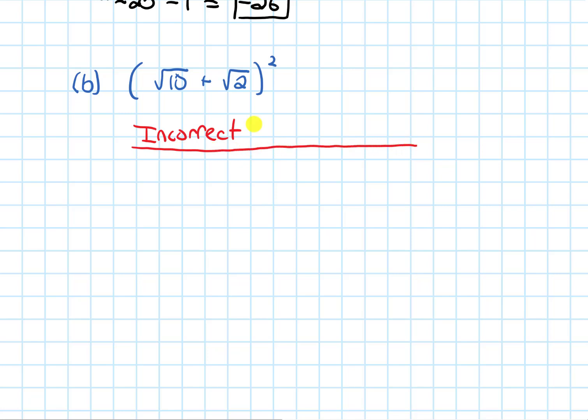I'm going to leave myself a little bit of room here. If I have parentheses root 10 plus root 2 squared, the temptation is to see that exponent and bring it to the root 10, and then bring it to the root 2 to say, isn't this just root 10 being squared plus root 2 being squared? Because if we did that, root 10 being squared would be 10, and then root 2 being squared would be 2.